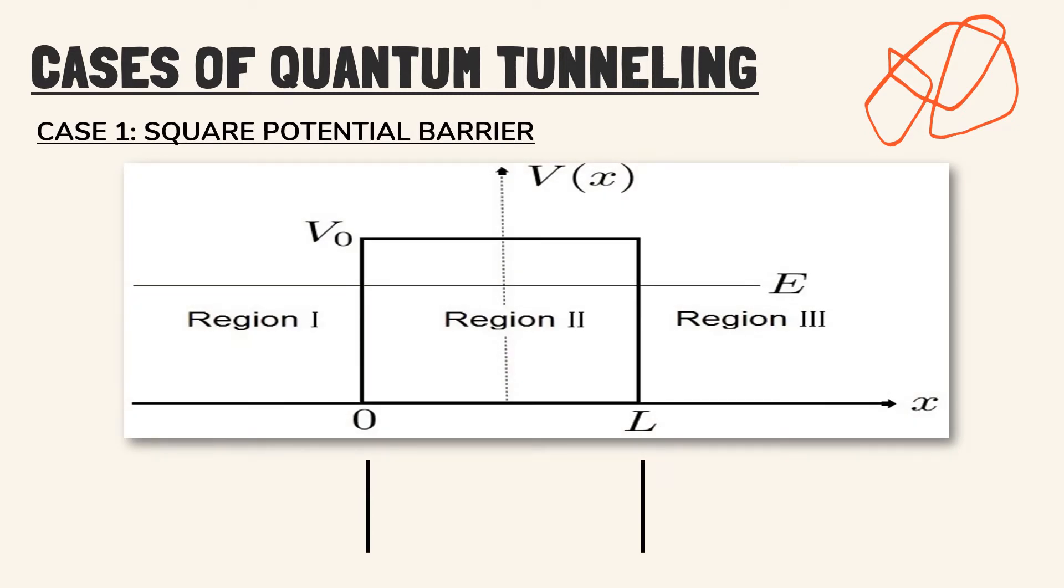In square potential barriers, the system is divided into three regions. Region 1 at the left of the barrier, where x is equal to 0 and the potential energy is 0.